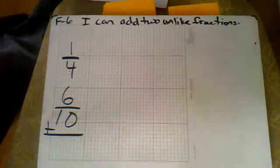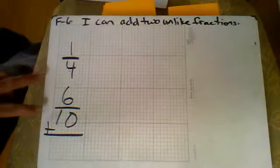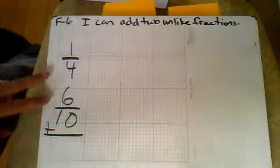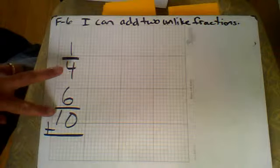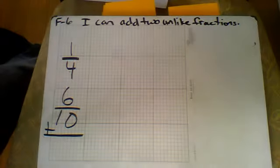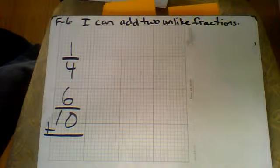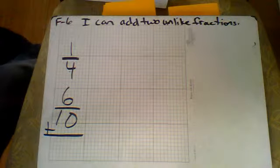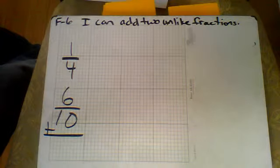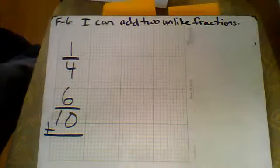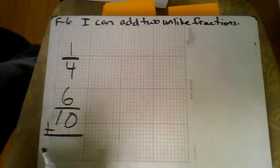Hey folks, Mr. Walsh here on F6. I can add two unlike fractions. Here we have it. We're going to be adding those two together. First thing I notice is the denominators are not the same. It makes it very difficult, well impossible, to add two fractions with different denominators unless I convert them into fractions with the same denominators.